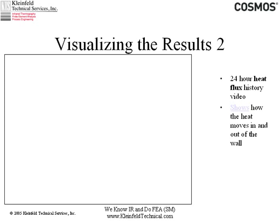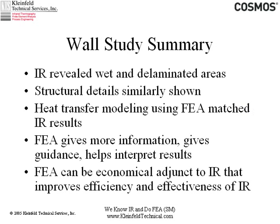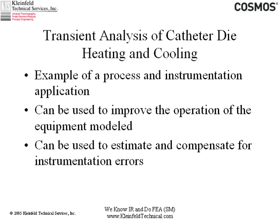What we found from the wall study: the IR worked as hoped based on our understanding of the physics — it revealed wet and delaminated areas. Structural details were also shown where the ends of floors meet the exterior wall, adding more mass that can absorb heat — the same as how the wet areas work, absorbing heat differently because they've got more thermal mass, resulting in less temperature swing. We found that heat transfer modeling using the FEA approach matched the infrared results, gave us more information, gave us guidance, helped us interpret the results, and it's an economical adjunct to the infrared as it would be to pretty much anything else you want to do.